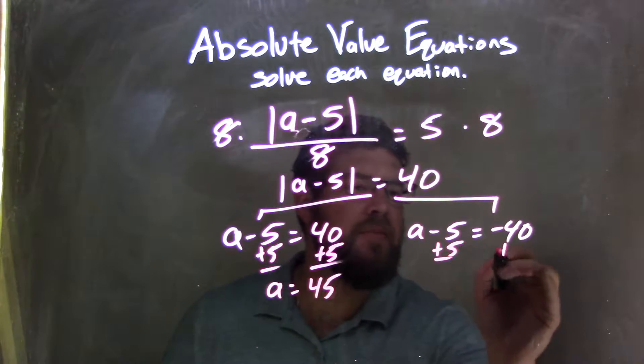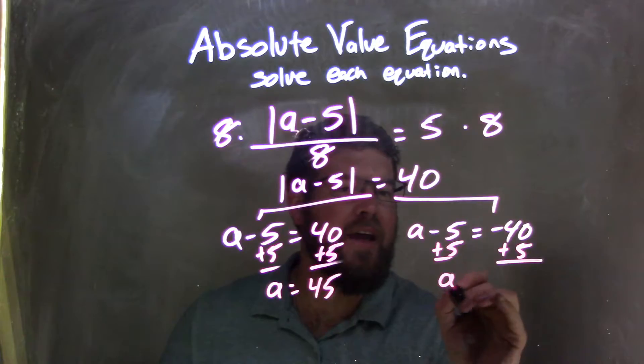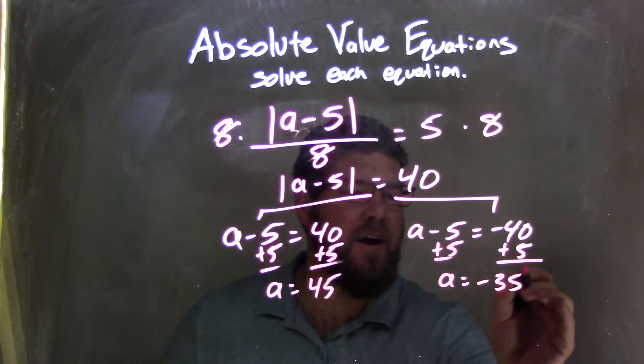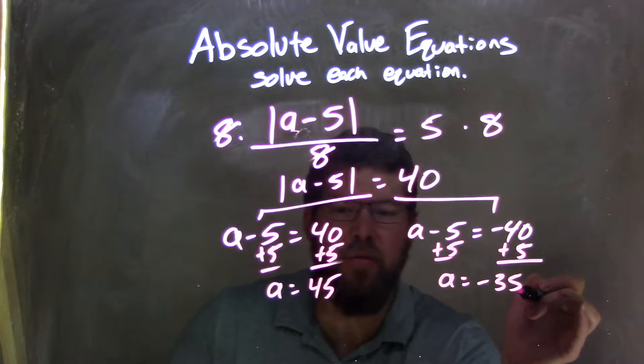Here, I add 5 to both sides, leaving me with a equals negative 35. Negative 40 plus 5 is negative 35.